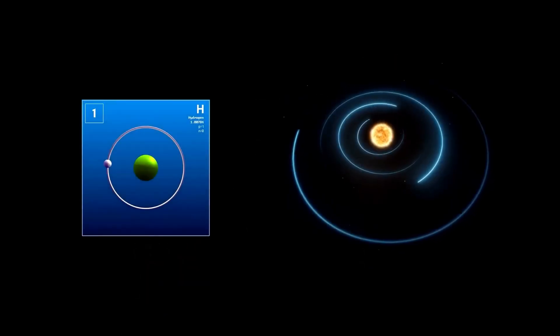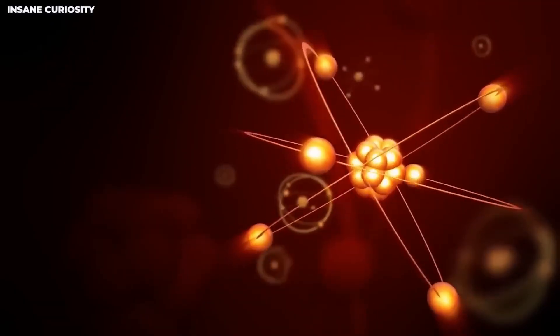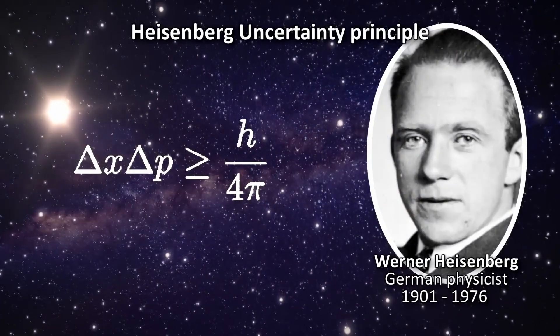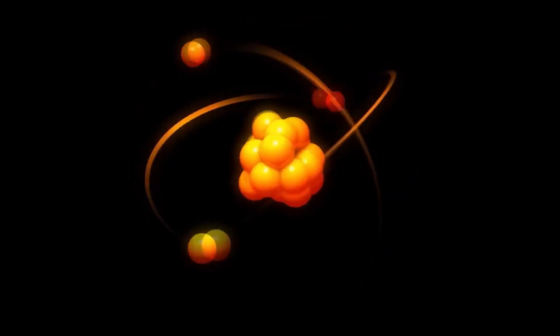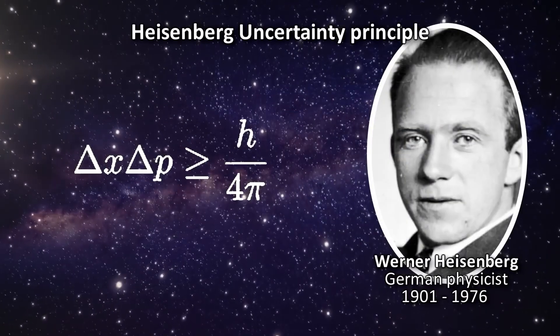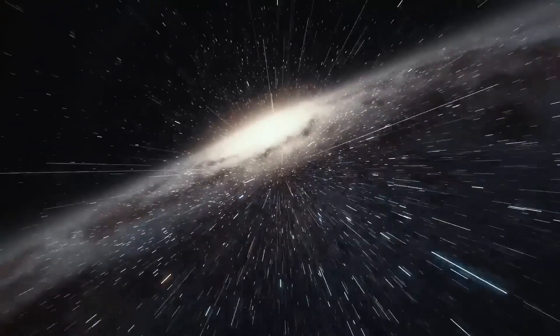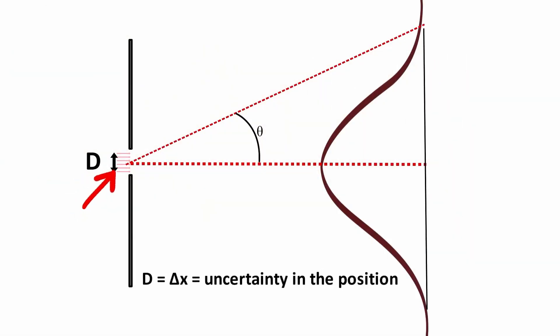Following this, in 1925, Werner Heisenberg introduced the uncertainty principle, challenging the very foundation of what we could know about particles. He proposed that you can't know both the position and the momentum of a particle with absolute certainty. It's like trying to take a perfect Instagram photo while you're laughing. You can either have a perfect pose or a genuine expression, not both.